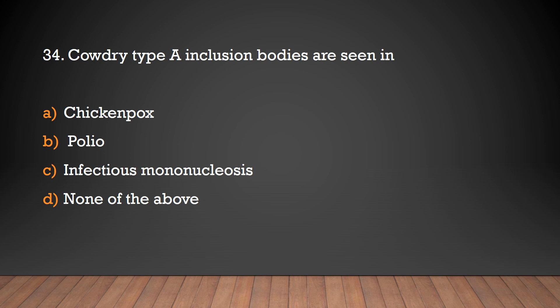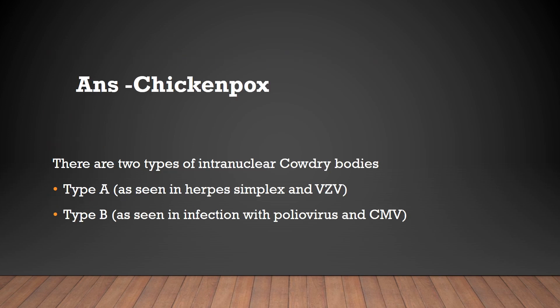Cowdry type A intranuclear inclusion bodies are seen in chickenpox. There are two types of intranuclear Cowdry bodies: Type A, seen in herpes simplex and varicella zoster virus infection, and Type B, seen in infection with poliovirus and cytomegalovirus.